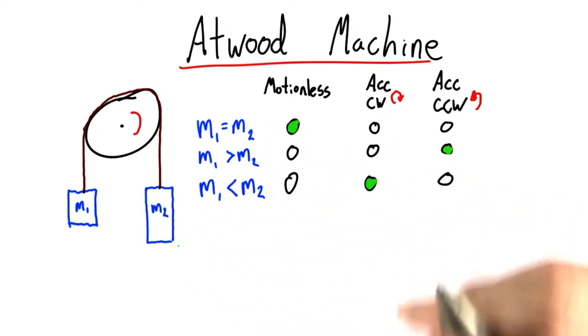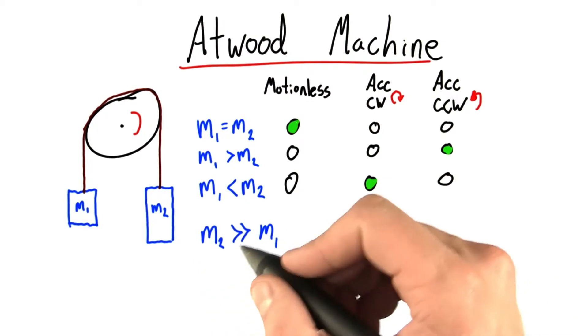Before we jump into solving the problem, there's still a little bit more benefit we can get from doing more thought experiments. Let's think about what happens when M2 is much, much bigger than M1.